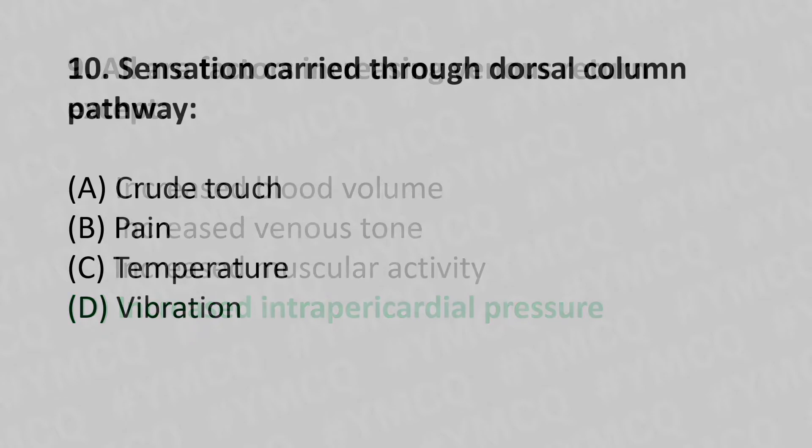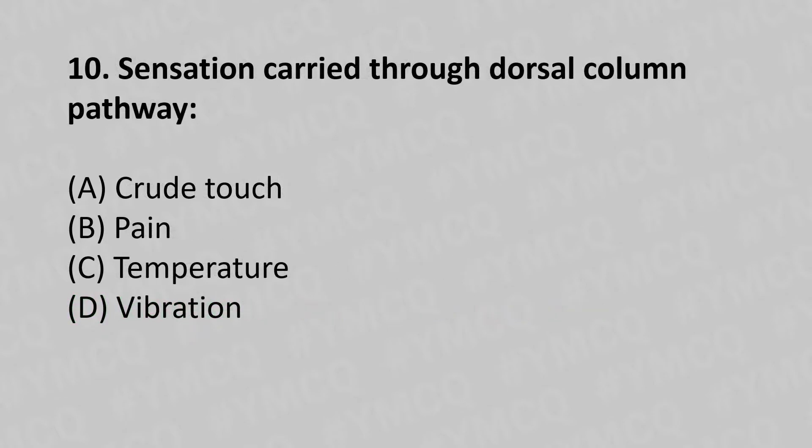Moving to our tenth question. Sensation carried through the dorsal column pathway: Option A, crude touch. Option B, pain. Option C, temperature. Option D, vibration. And the answer is Option D, vibration.